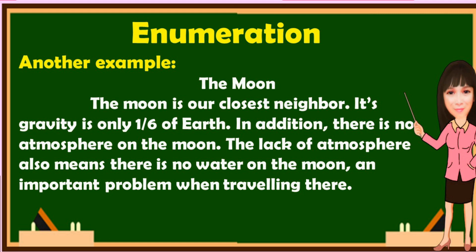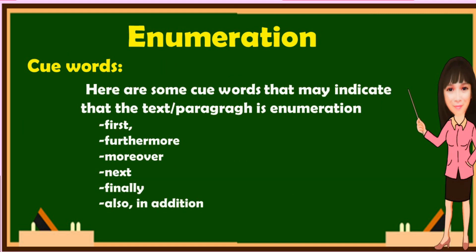Another example is about the moon. The moon is our closest neighbor. Its gravity is only one-sixth of earth's. In addition, there is no atmosphere on the moon. The lack of atmosphere also means there is no water on the moon — an important problem when traveling there. In this example, the main idea is the moon, and it lists the characteristics or features about the moon. Keywords for enumeration include: first, furthermore, moreover, next, finally, also, in addition.